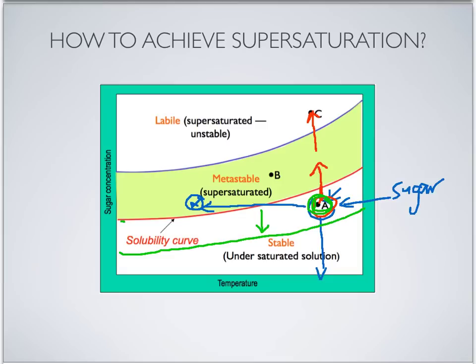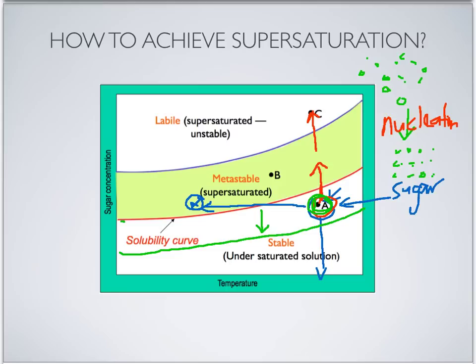Once the solution or melt has been supersaturated or supercooled, there is a thermodynamic driving force for crystallization. The molecules in the liquid state rearrange and eventually form into a stable cluster. Originally the solutes are in random order, but when the thermodynamic driving force is available the solutes arrange into an ordered arrangement — a crystalline lattice. This process is called nucleation, which is the first step in the crystallization process.